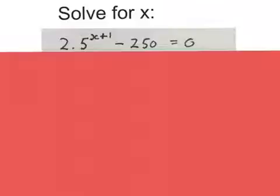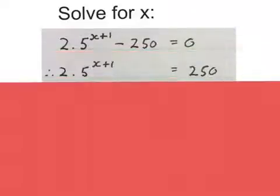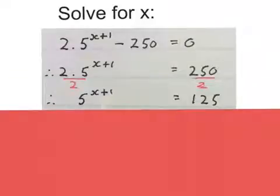But what we do is we move this stuff away from x for this guy first. I'm first going to take this guy to the other side. Using mathematics to get him there, so I plus 250 on both sides. Now we move the 2 away, 2 times 5, I divide by 2 on both sides. That leaves me with 5 to the power of x plus 1 equals 125.